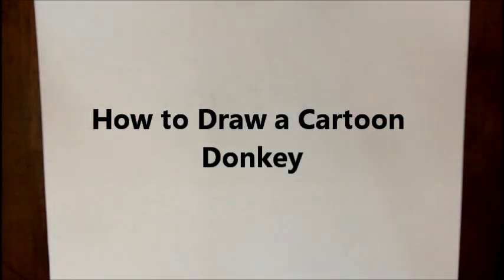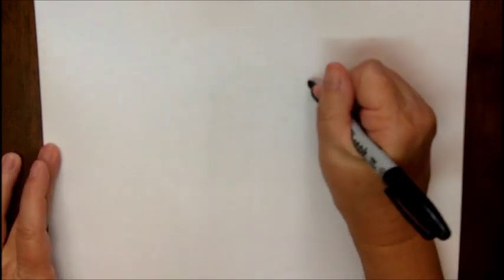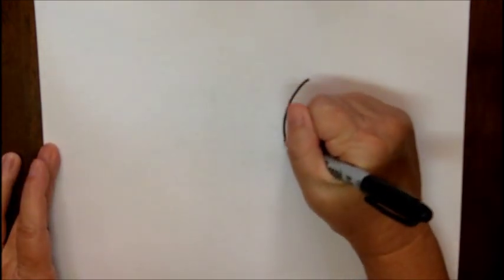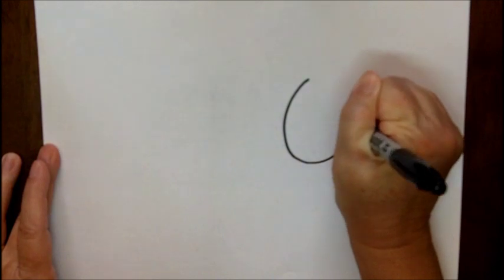Alright, today I'm going to show you how to make a donkey, so let's get started. We're going to make an oval shape with a little bit of a point at the top.